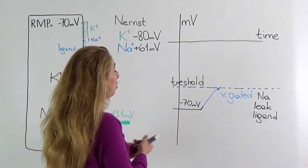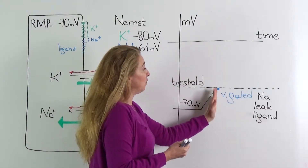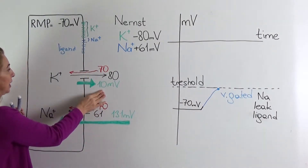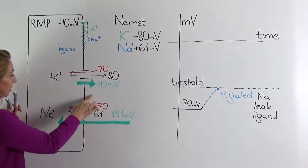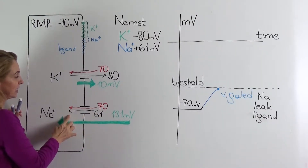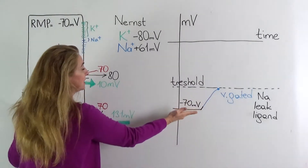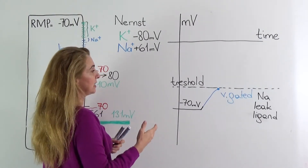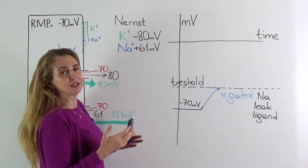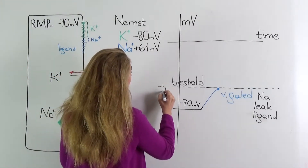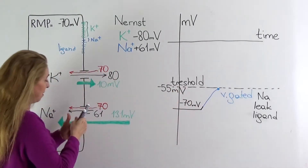If we look at the forces acting at this point: for sodium, the concentration gradient force stays the same at 61, pushing sodium into the cell. But at this point, the electrical potential of the cell is a little different. The threshold is approximately 15 to 20 millivolts less negative than the resting membrane potential, so in this example it is around minus 55 millivolts.